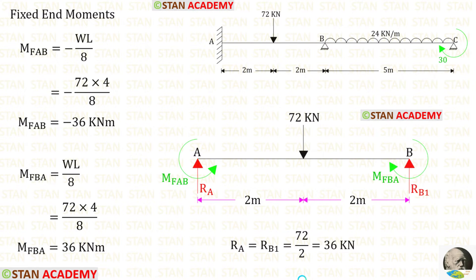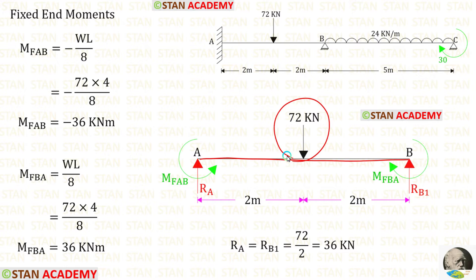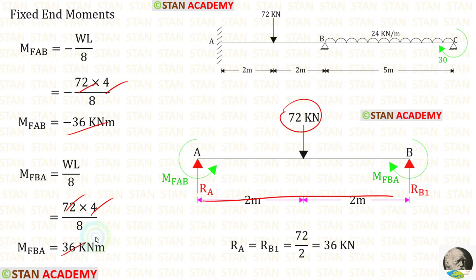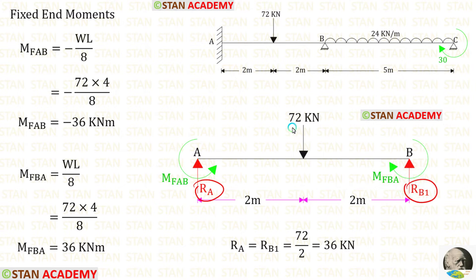Now let us find the fixed end moments and reactions. First, let us find them in span AB. In span AB, we have a point load of 72 kilonewton acting at the center. The formulas for the fixed end moments are minus WL over 8 and positive WL over 8, where W is 72 and L is 4. After calculation, we get M_AB and M_BA. For the vertical reactions RA and RB1, we divide the load 72 by 2, giving us 36 kilonewton.